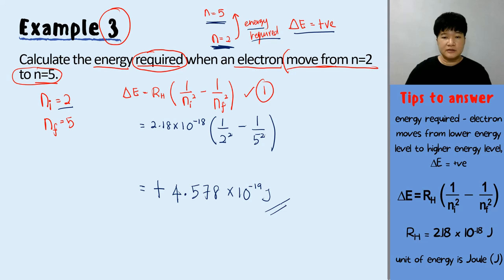Kind reminder: delta E must have a positive symbol as your final answer, and the unit must come along in your final answer.